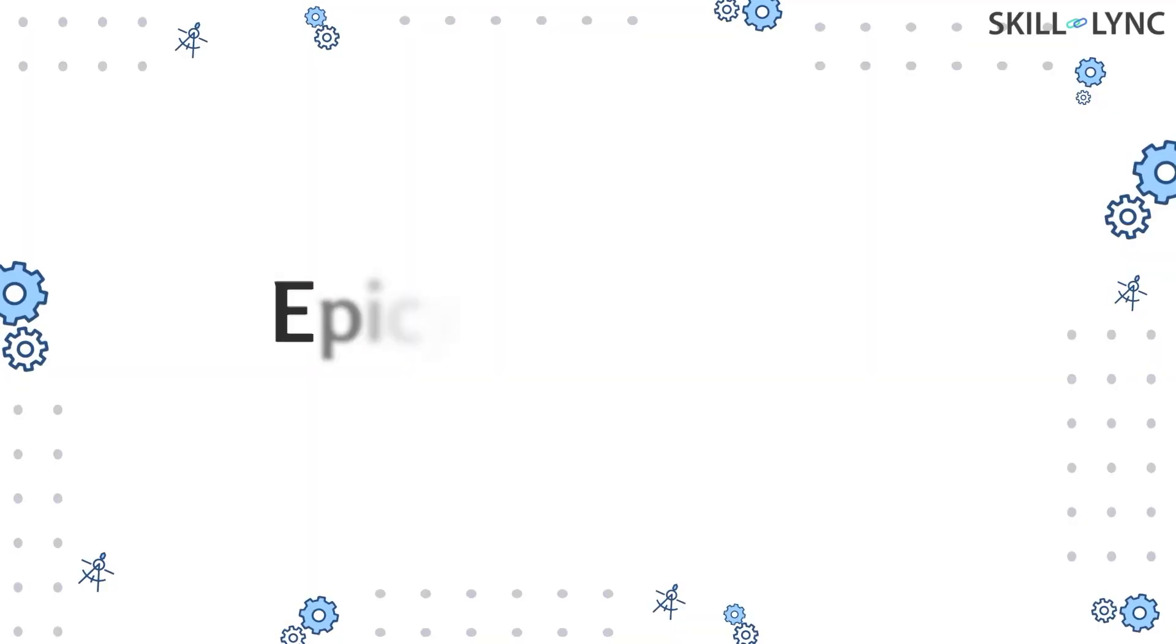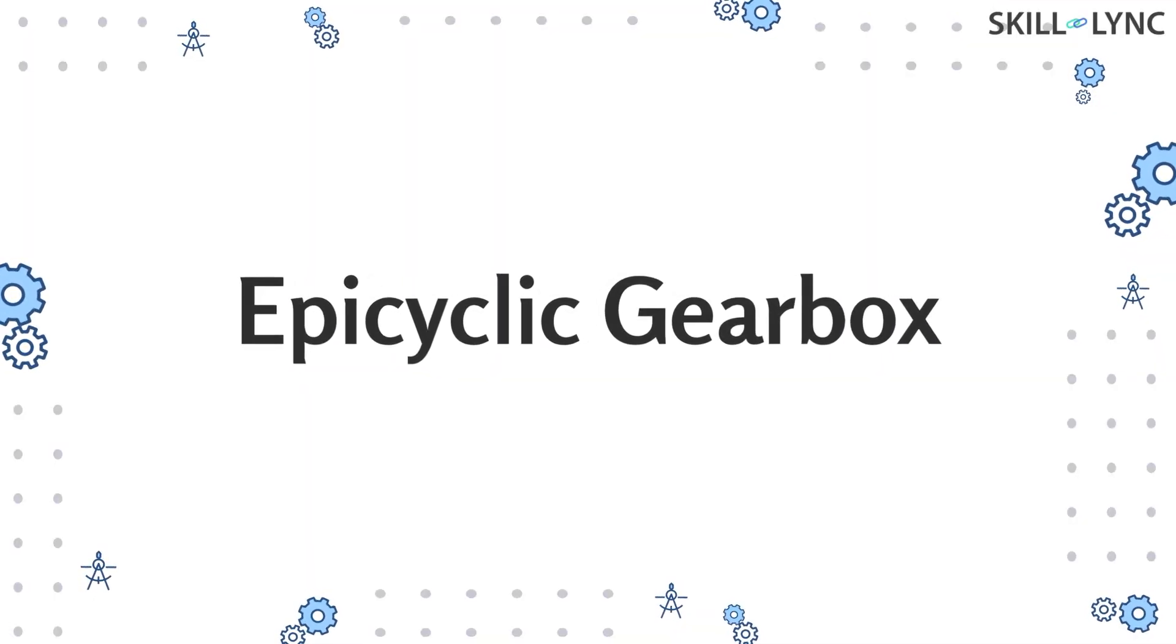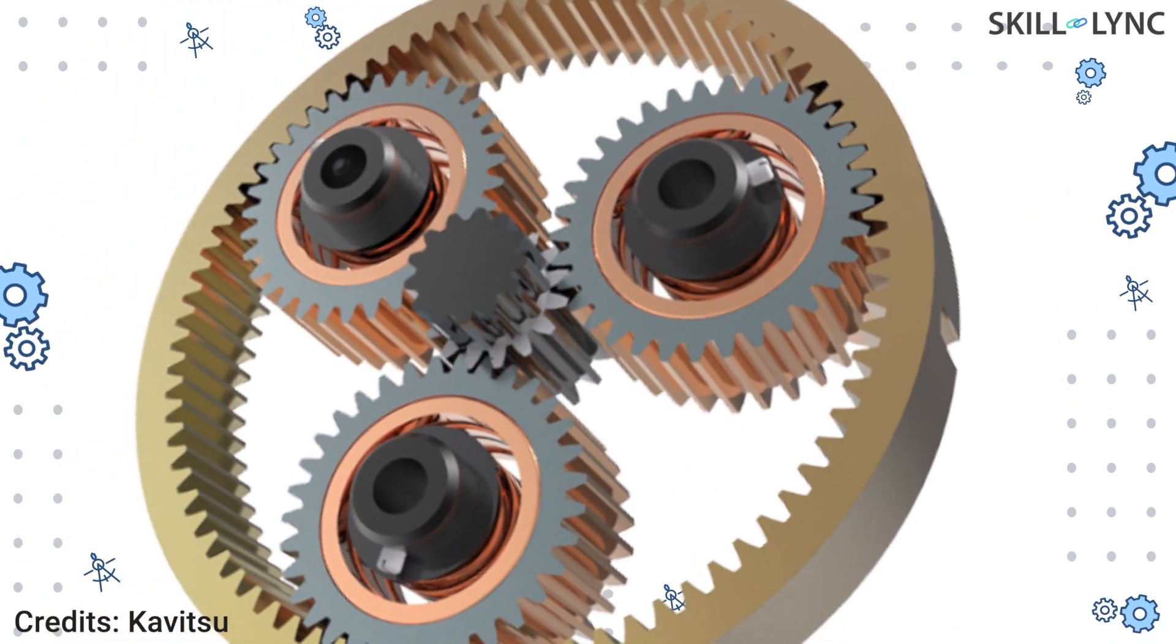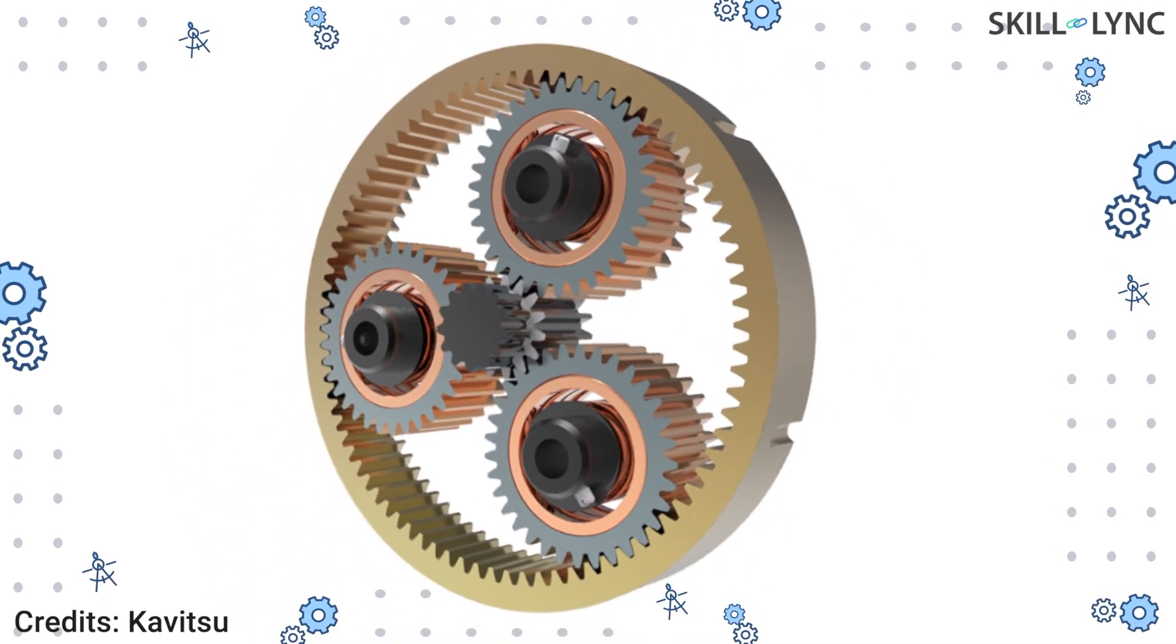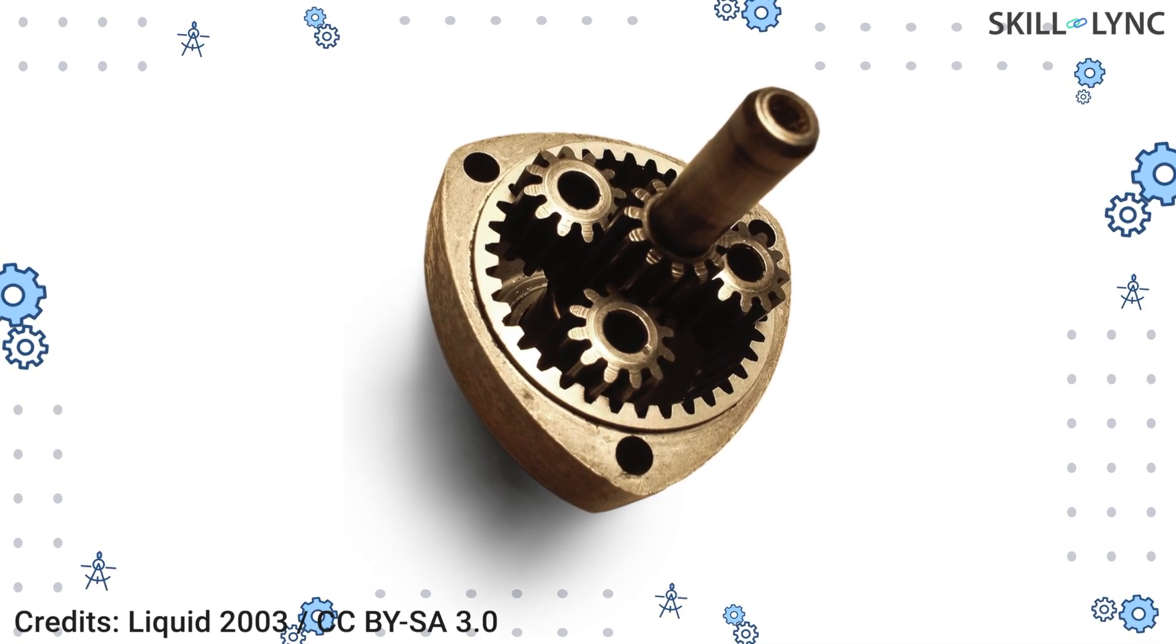So let's get into the topic. Epicyclic gearbox, also called a planetary gear set, is usually employed for high torque transmission and higher speed reduction. This gear set is also used in automatic transmission systems.